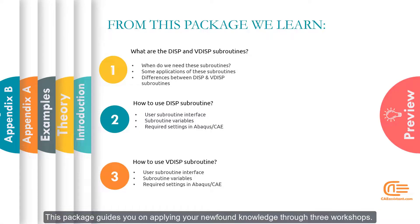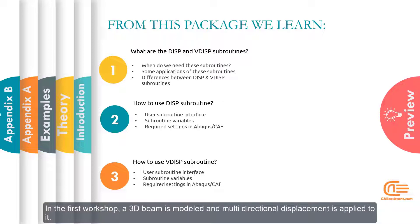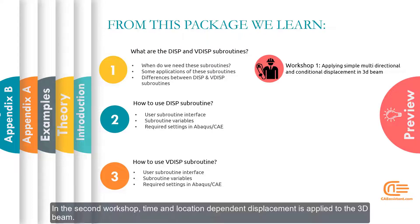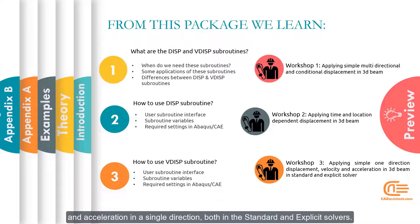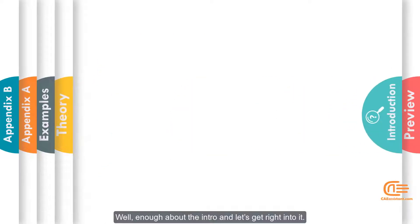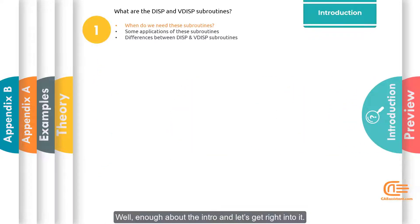This package guides you on applying your newfound knowledge through three workshops. In the first workshop, a 3D beam is modeled and multi-directional displacement is applied to it. In the second workshop, time and location-dependent displacement is applied to the 3D beam. The last workshop involves modeling a 3D beam and sequentially applying displacement, velocity, and acceleration in a single direction, both in the standard and explicit solvers. Now, enough about the intro — let's get right into it.